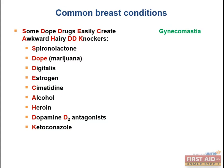Dopamine-2 antagonists: dopamine has negative feedback on prolactin synthesis, so antagonizing the D2 receptor enables prolactin to be secreted. These antipsychotic drugs — aka typical neuroleptics such as haloperidol, trifluoperazine, fluphenazine, chlorpromazine, thioridazine — can cause gynecomastia. Alcohol damages the liver, decreasing its ability to metabolize estrogen, causing gynecomastia, palmar erythema, and spider nevi — all effects of increased estrogen.